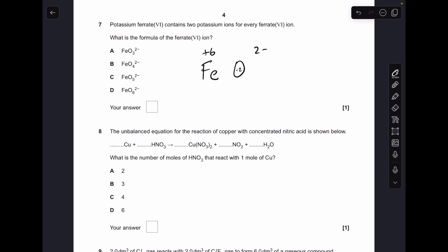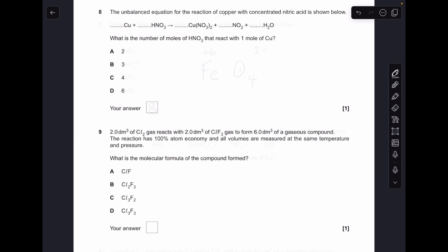Number seven: potassium ferrate(VI) contains Fe in the +6 oxidation state. So how many oxygens at -2 each do we need to give that overall 2- charge? The answer is four, so the answer is B. Number eight: first thing we need to do is just balance the equation, and from that you can see that we need four moles of nitric acid, so the answer is C.